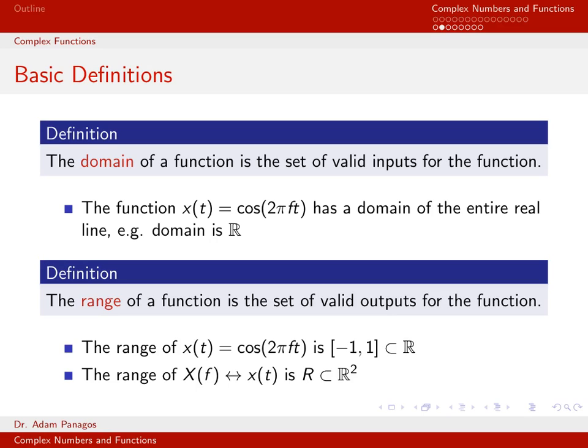The range of the function is the set of valid outputs. For x of t equals cosine of 2 pi f t, no matter what value I plug in for t, cosine of 2 pi f t is always going to be some number between minus 1 and 1. It oscillates at frequency f between values minus 1 and 1. So the range of this function is the interval from minus 1 to 1, which is a subset of the real line.